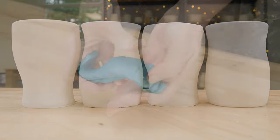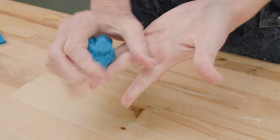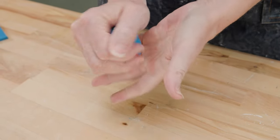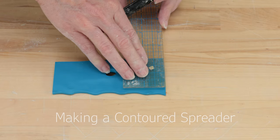The good thing about the polymer clay is that you can recycle the scraps to make other things until the clay is ultimately baked. Now let's try making a contoured spreader.